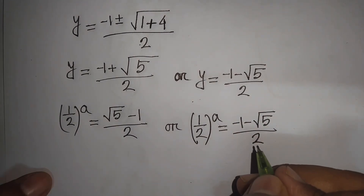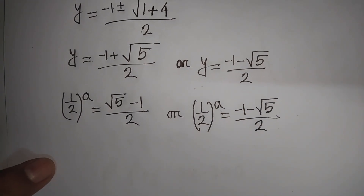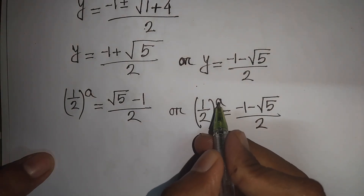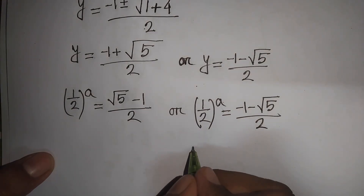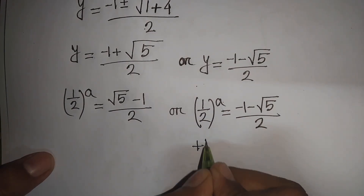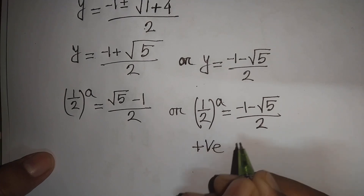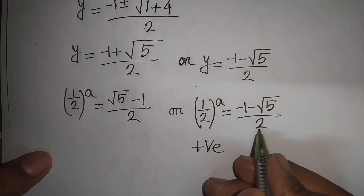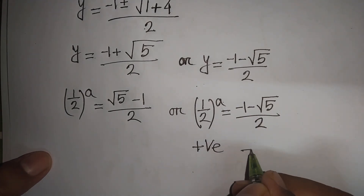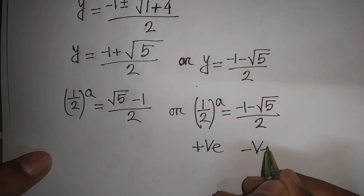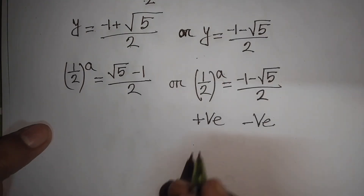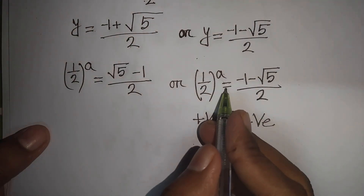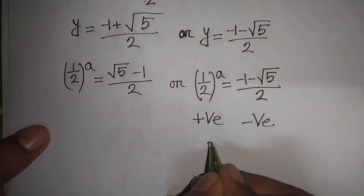Remember that (1/2)^a for any number a is always positive. But minus 1 minus square root of 5 divided by 2 is negative. So positive cannot equal negative — this case is rejected.